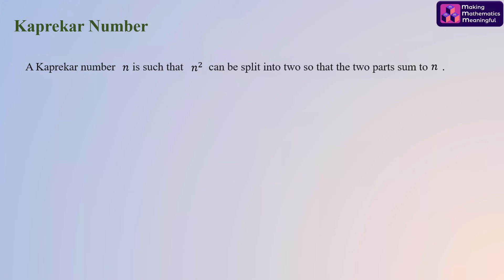There is a lot of confusion about the Kaprekar constant and the Kaprekar number, so I will quickly clarify what a Kaprekar number is — it is different from the Kaprekar constant. A Kaprekar number n is such that n² can be split into two parts so that the two parts sum to n.